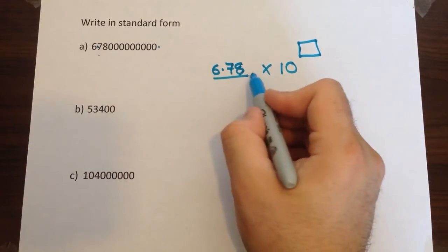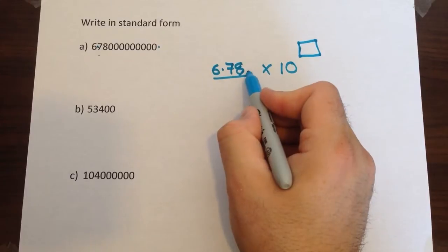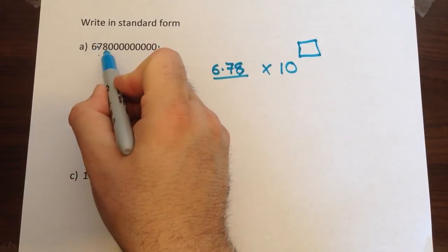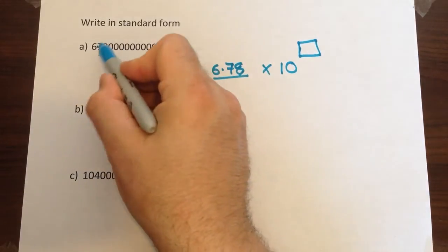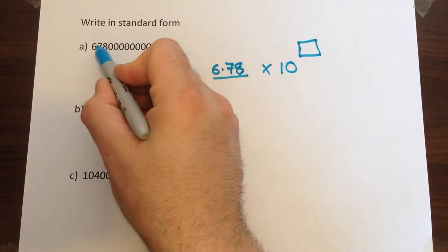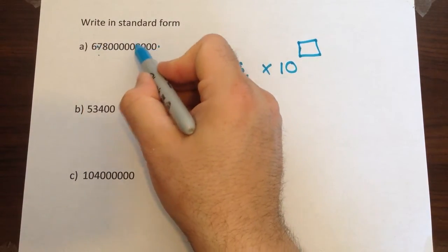We don't include any of the zeros because they're irrelevant after the second decimal point. We only include the non-zero numbers. Now the power is how far we've moved the decimal point. So to get from here to here how many numbers have we jumped over?